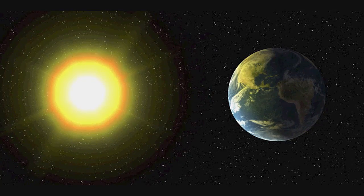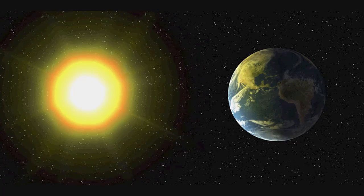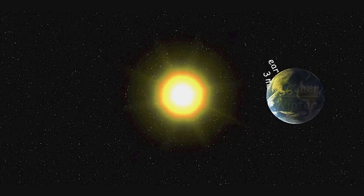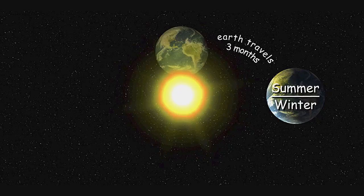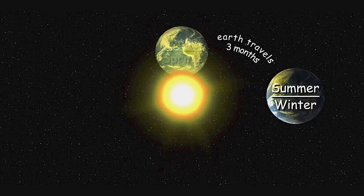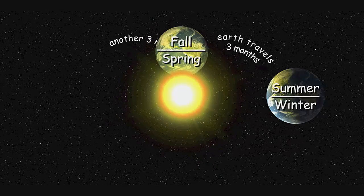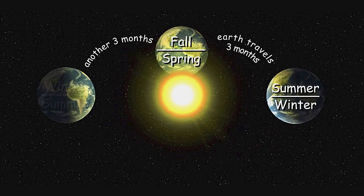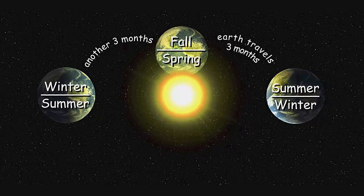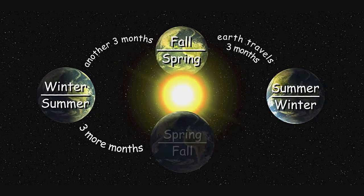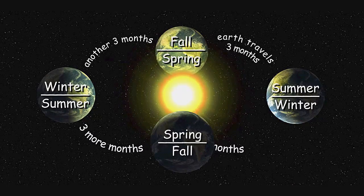In this example, the Northern Hemisphere is tilted towards the sun, making it summer, and the Southern Hemisphere is tilted away from the sun, making it winter. In three months, as the Earth continues its journey around the sun, it becomes fall in the Northern Hemisphere and spring in the Southern Hemisphere. When the Earth travels for another three months, it's winter in the Northern Hemisphere and summer in the Southern Hemisphere. Three more months, and it's spring in the Northern Hemisphere and fall in the Southern Hemisphere. So you see, the Earth's tilt in relationship to the sun is what makes the seasons.